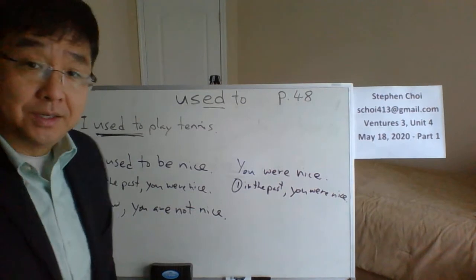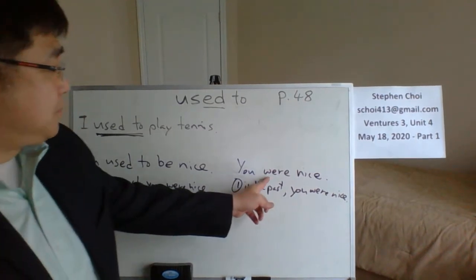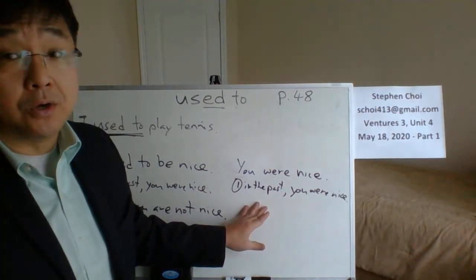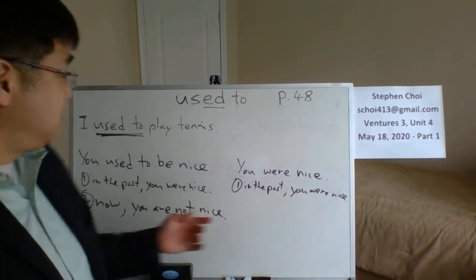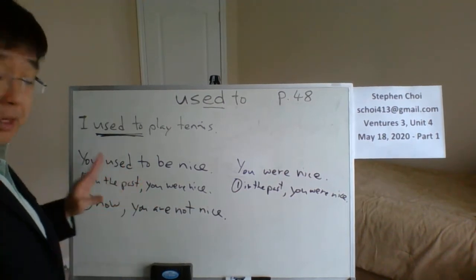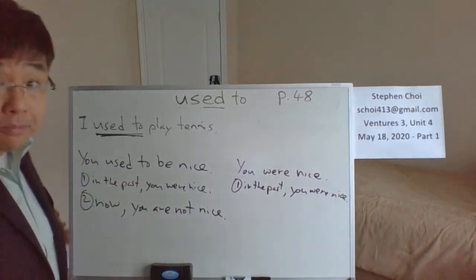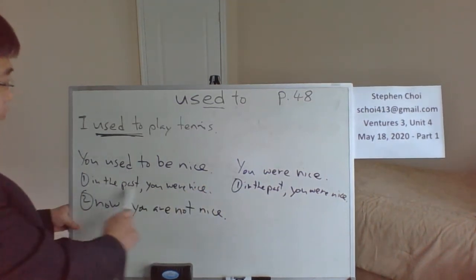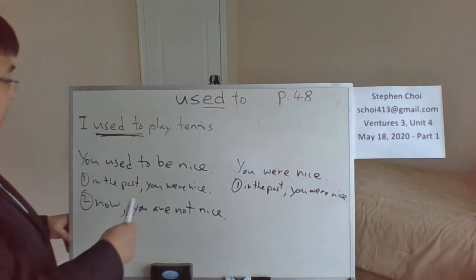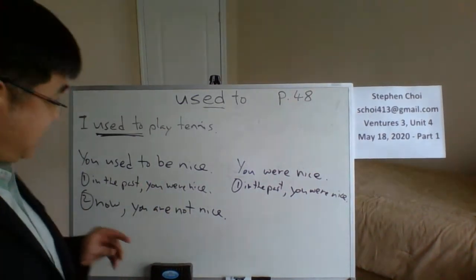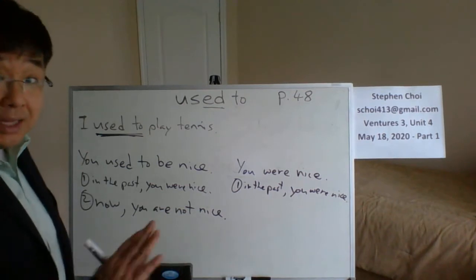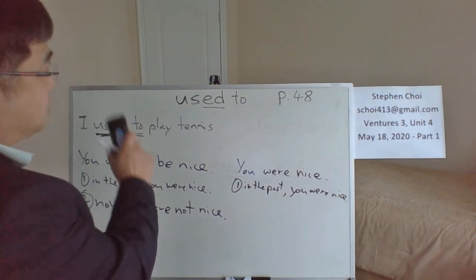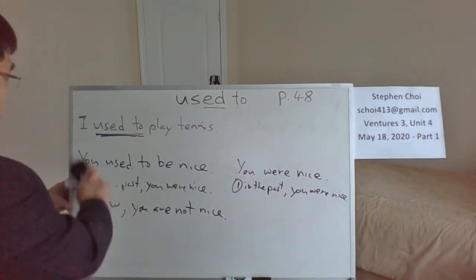So, if you just write simple past, we only have information about the past. But when you use 'used to' — which is also simple past — we get additional information. We know you were nice in the past, but today you're not nice anymore. That's the difference between using 'used to' and not using it.